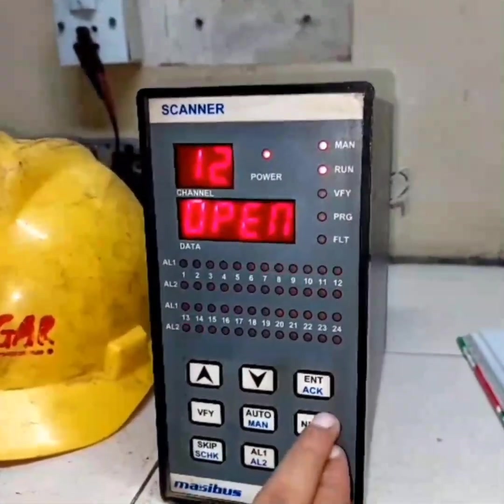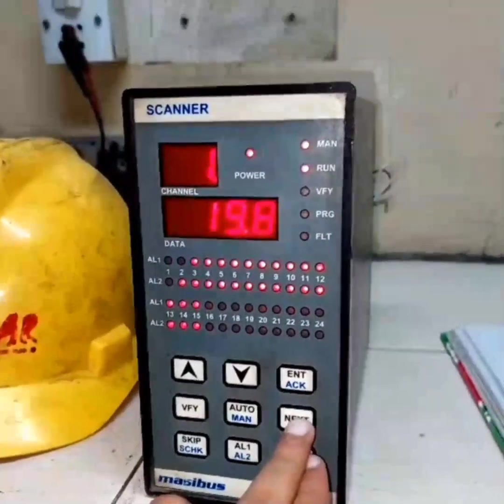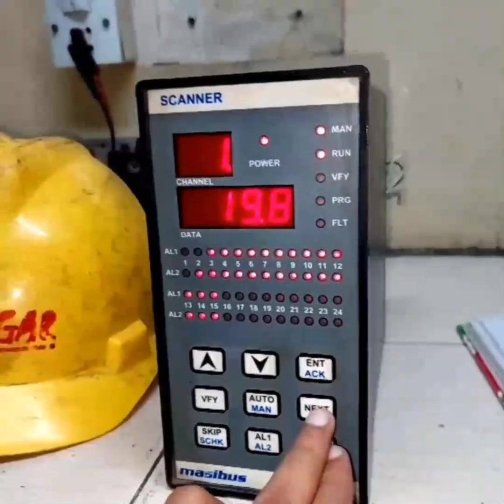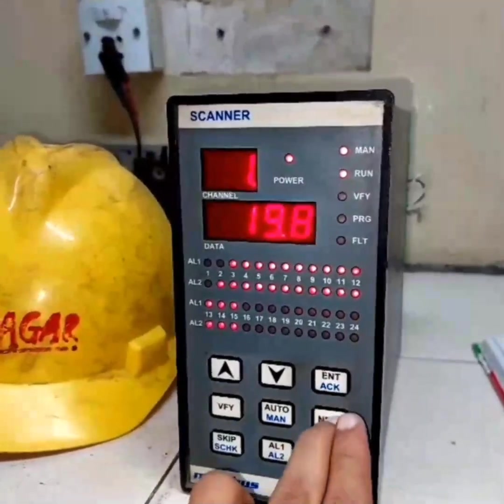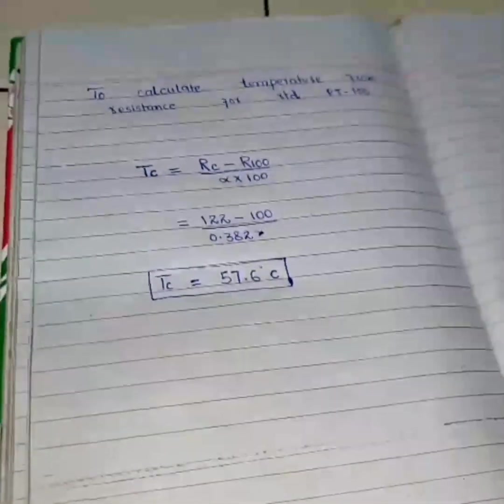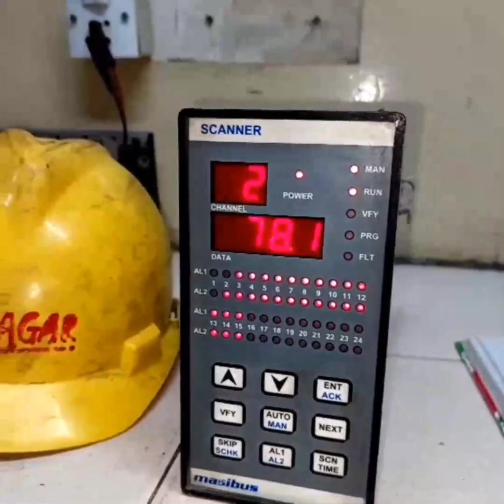Put it on manual. Channel one should give zero value as we have connected a resistor of 100 ohm. Channel two with 122 ohm should give 57.6 per our calculated value, but it is showing 78.1, so we need to calibrate this.